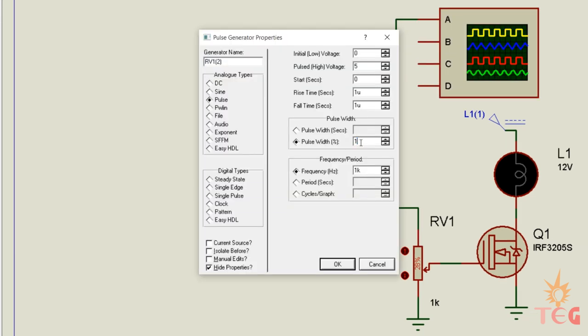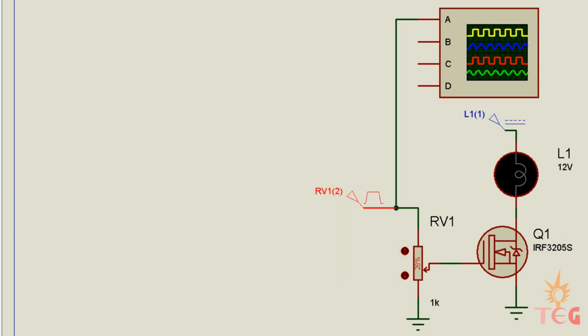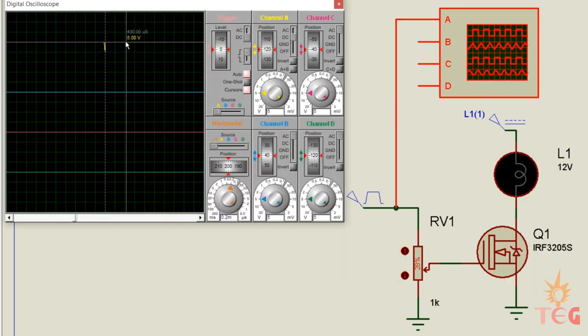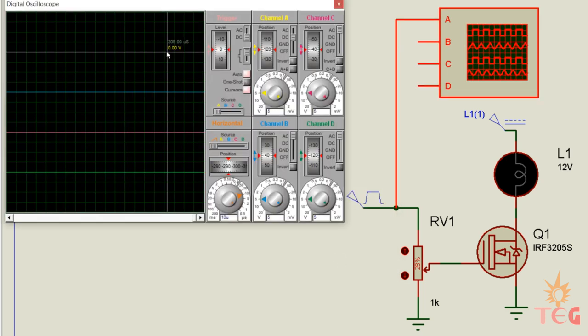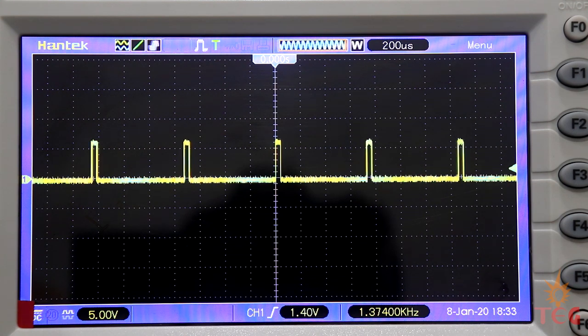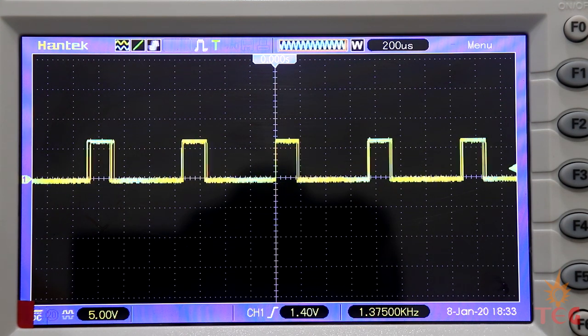This 50% is called the duty cycle of the PWM wave, which gives us a final voltage of 2.5 volts. As this on time or duty cycle increases, the overall voltage increases. When duty cycle reaches 100% we get 5 volts output, and when it is at 0% we get 0 volts output. This is called Pulse Width Modulation as we are modulating the width of the pulse to get variable voltage.